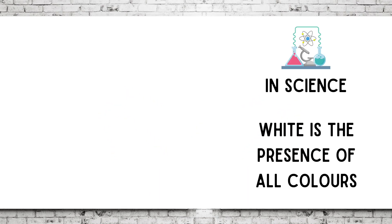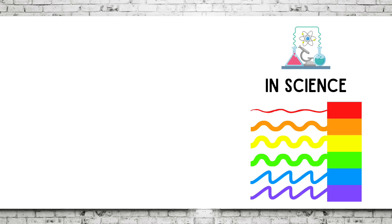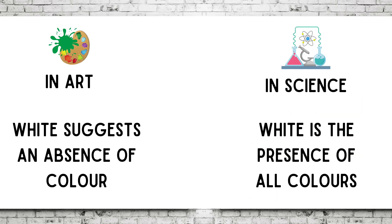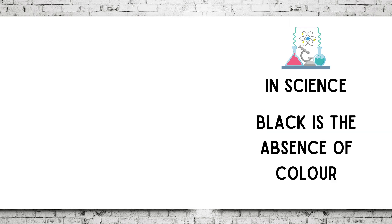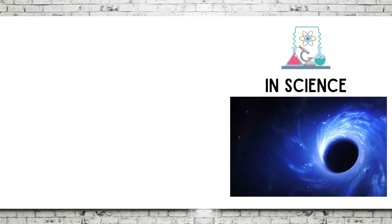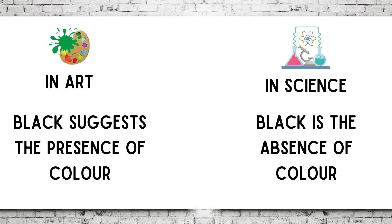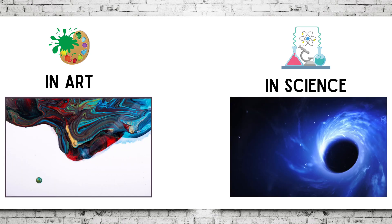In science, white is the presence of all colors. Whereas in art, white suggests an absence of color — think of a white piece of paper, ready to be painted on. In science, black is the absence of color, as indicated by this black hole. Whereas in art, black suggests the presence of color. Here, multiple colors of paint have been mixed together, creating a dark or even black color.